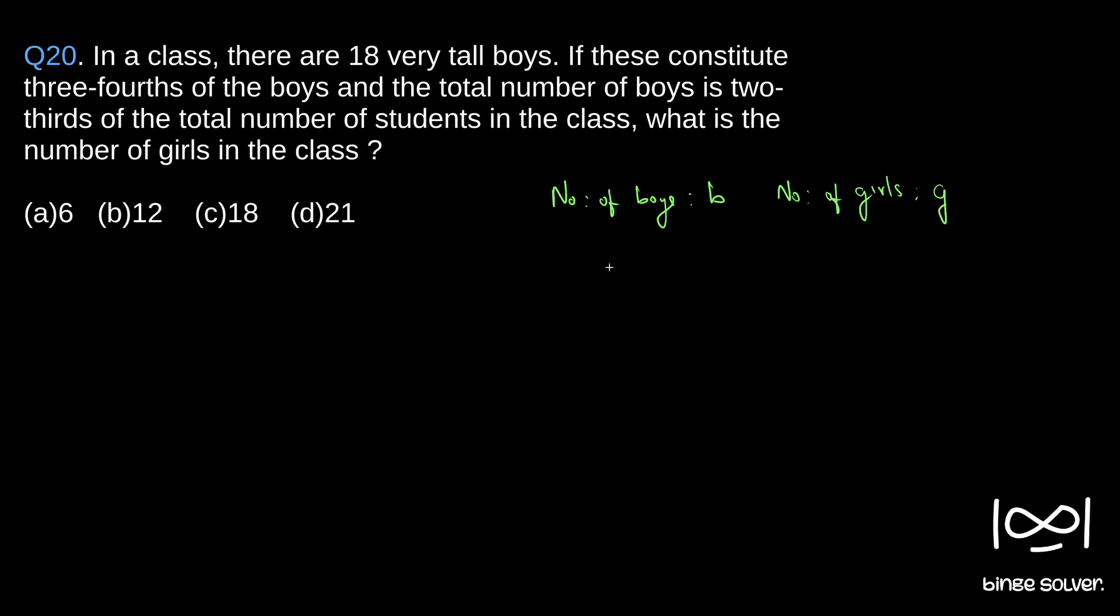So B and G. Now it is given there are 18 very tall boys. So 18 very tall boys constitutes three-fourths of the boys, which is 3/4 B.